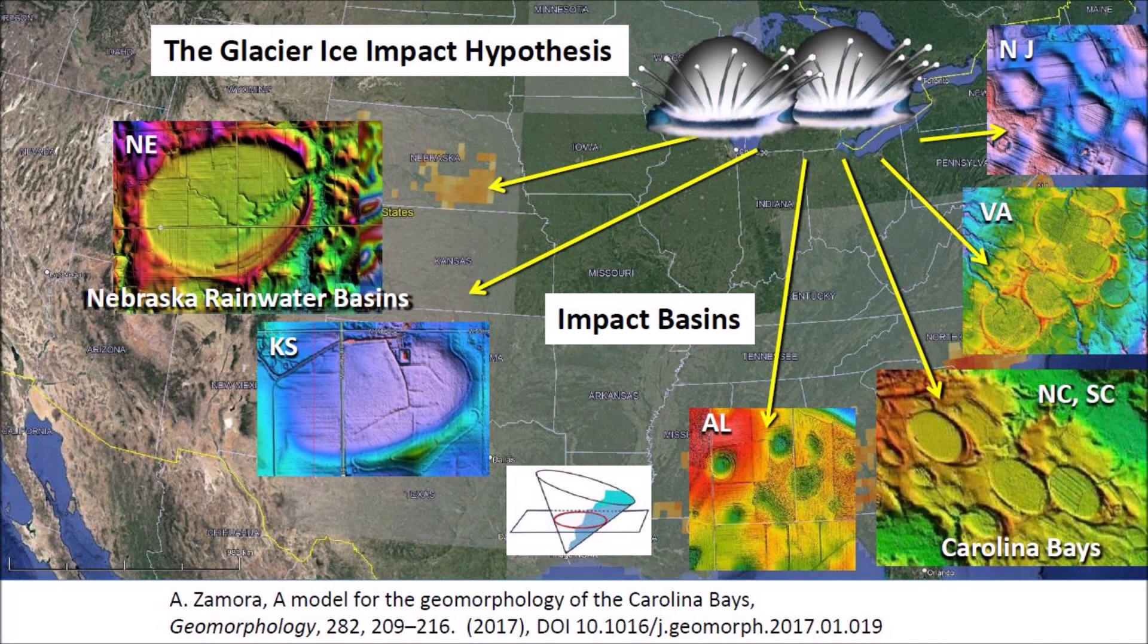Welcome to another edition of the Carolina Bay of the day, where we study the secondary impacts made by the glacier ice boulders that were ejected by one or more extraterrestrial impacts on the Laurentide Ice Sheet.